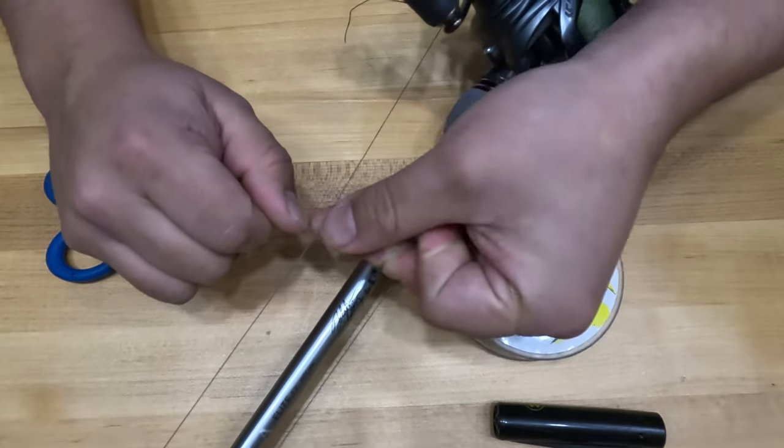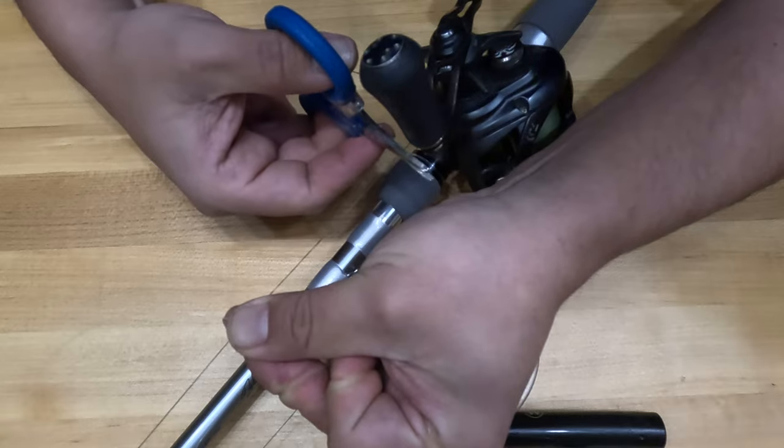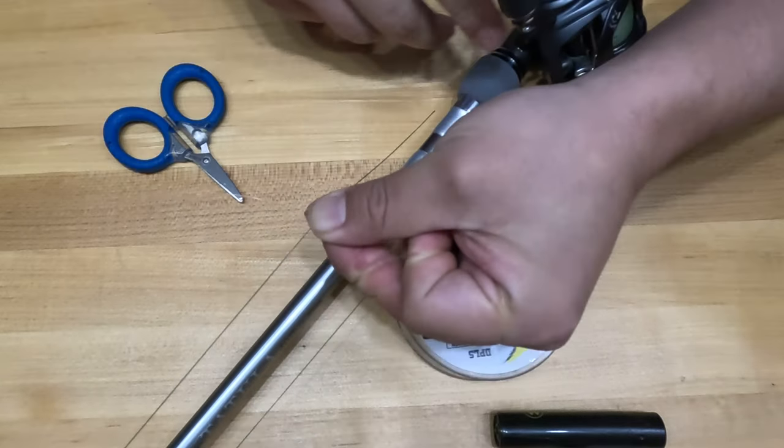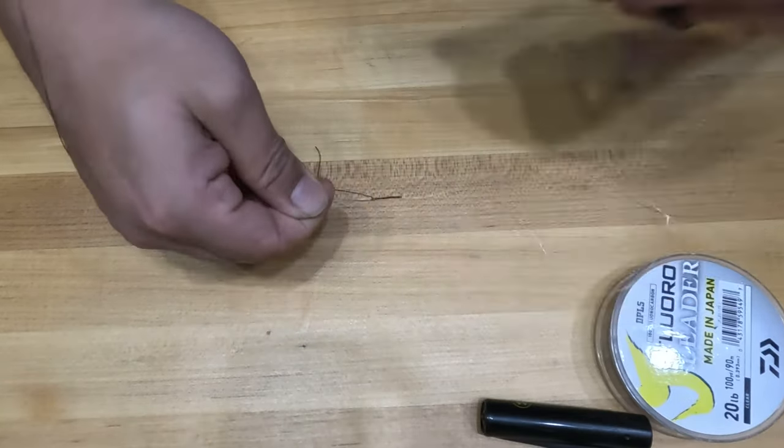With the Chinese wrap being done, the only thing left to do is cut the tag end off your handle. You should be left with something that looks like this.